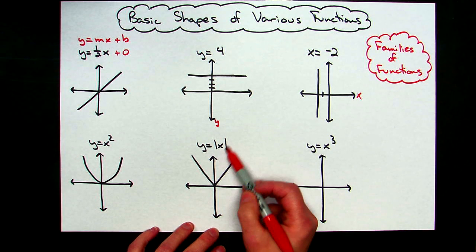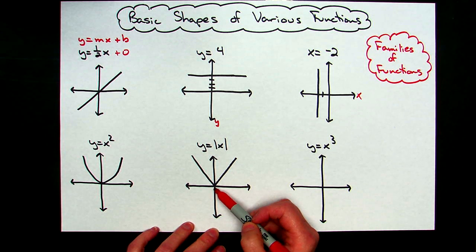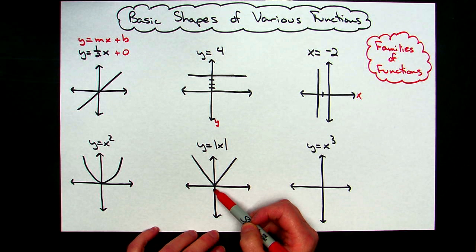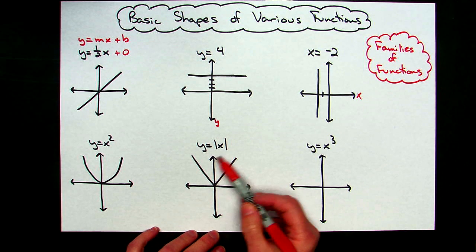An equation with an absolute value sign in it is going to be a V. Here again that could be upside down or right side up, and with lots of shifting it's just going to have that basic shape of V.